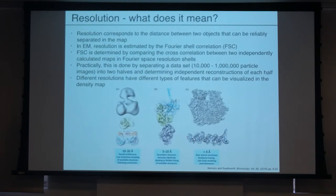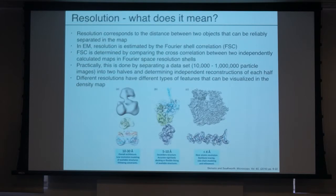You just have to ask a question that can be addressed with information in the 10–30 angstrom range. You're looking at overall architecture and you can model in crystal structures of particular domains. And if you have different conformations even at 10–30 angstroms, you can see how those domains move with respect to one another and propose experiments. In the end, that's all we're ever trying to do from structure. Structure is never the end-all, be-all of any project — it's a way to generate hypotheses that you can test.